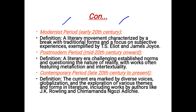Then we have the Modernist period in the 20th century. Its definition is a literary movement characterized by a break with traditional forms and a focus on subjective experiences — meaning people's feelings and experiences — exemplified by T.S. Eliot and James Joyce.